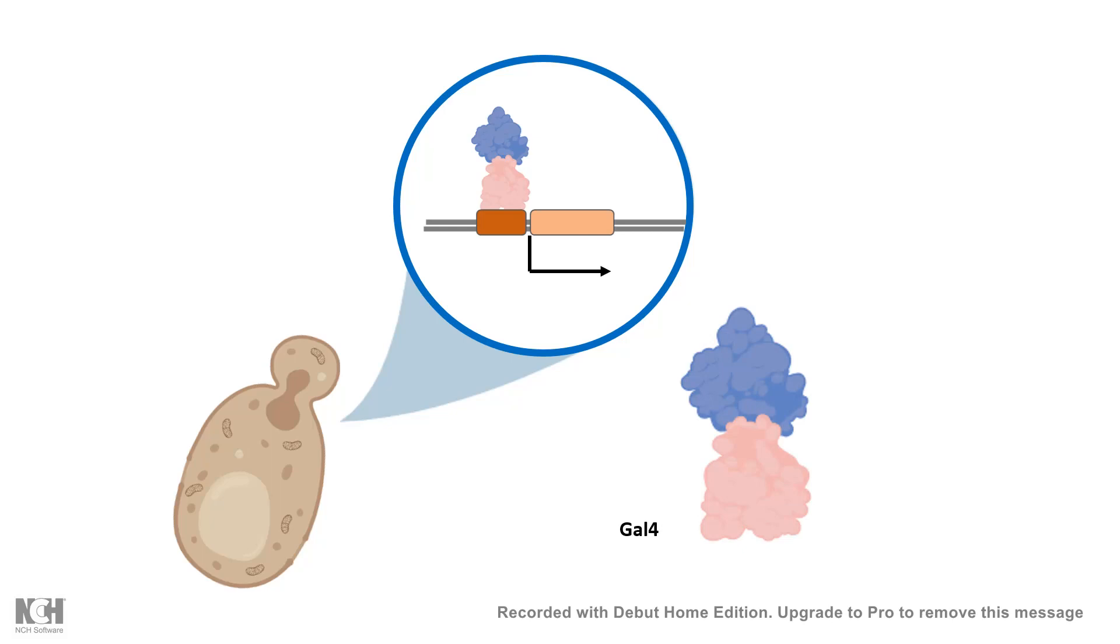Now before Yeast Two-Hybrid we should understand a basic metabolic principle inside the yeast. Yeast can metabolize galactose and they need enzymes for that which is encoded by gal gene and the transcription factor that transcribes these genes is known as gal4. Gal4 has an activation domain and a DNA binding domain. DNA binding domain binds to the DNA and activation domain interacts with the polymerase which would help the transcription to initiate.